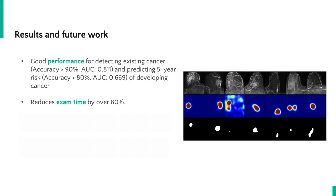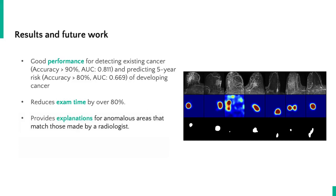The inputs and outputs from our model look like this, where the top row is a collection of MRI images for multiple patients. The areas in red in the middle row of images are the areas identified as abnormal by the model, and the areas in white in the bottom row are those deemed abnormal by a radiologist. With this comparison, we observe a good match between the model predictions and the judgment of a radiologist without any manual annotations.